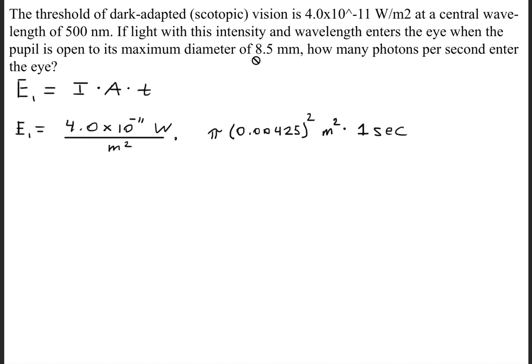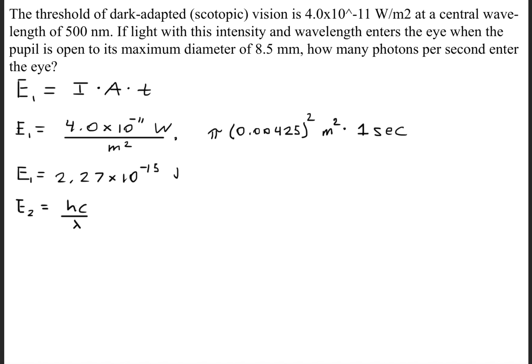Make sure that you don't use the diameter here — this is the diameter of the pupil. We need to find the radius of the pupil, so you would first convert this to standard units of meters and then divide by 2, so that you get 0.00425 as the radius of the pupil. Don't forget to square that value. This gives us an energy of 2.27 times 10 to the negative 15th joules.